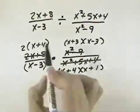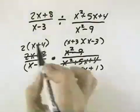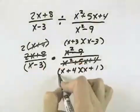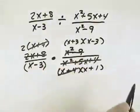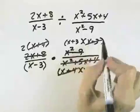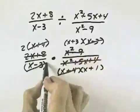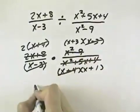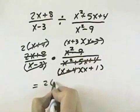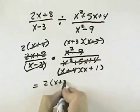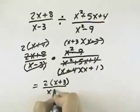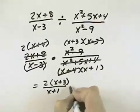We can start looking for common factors, such as (x + 4) in the numerator and the denominator, and (x − 3) in the numerator and the denominator. Those are the only common factors. What that leaves is 2 times (x + 3) in the numerator, and (x + 1) in the denominator.